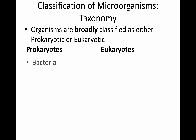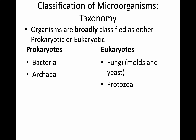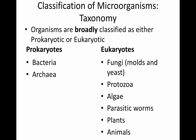Examples of prokaryotes include bacteria and archaea. Eukaryotic microbes include fungi such as molds and yeast, different protozoa, algae, parasitic worms called helminths, plants, and even animals can be microscopic. But they are all eukaryotic organisms with a defined nucleus.